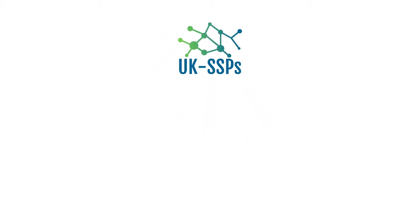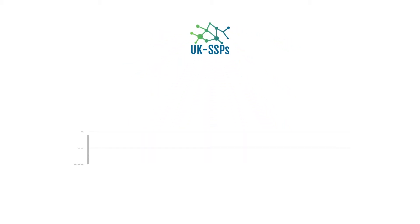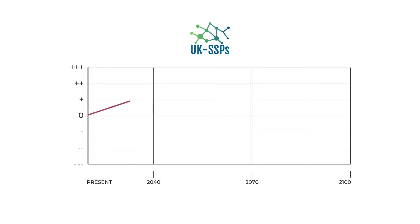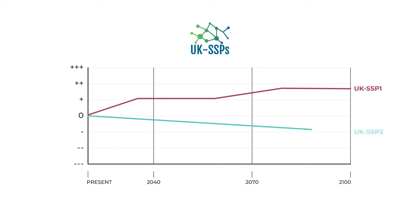For each indicator, semi-quantitative trends are provided in seven categories — from strong decrease to strong increase — for all five UK SSPs and the three time periods: present to 2040, 2040 to 2070, and 2070 to 2100. The trends are consistent with the narratives and the global SSP database.